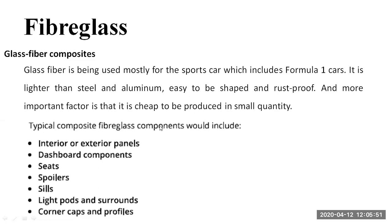Typical composite fiberglass components include interior or exterior panels, dashboard components, seats — composites can even be used for seats — spoilers, sills, light parts and surrounds, and car corner caps and profiles. These are components you can easily identify on any F1 car.